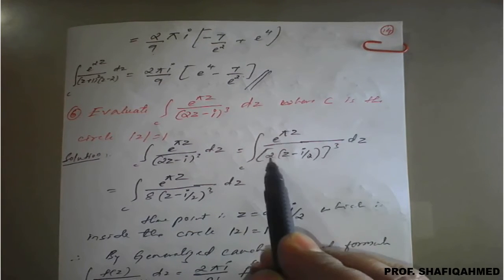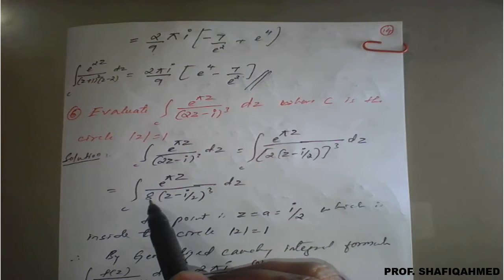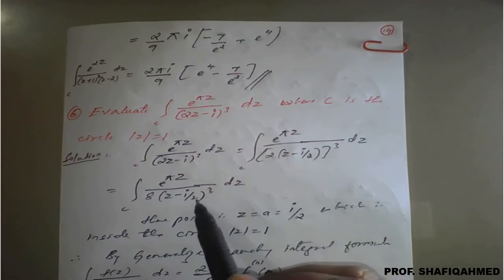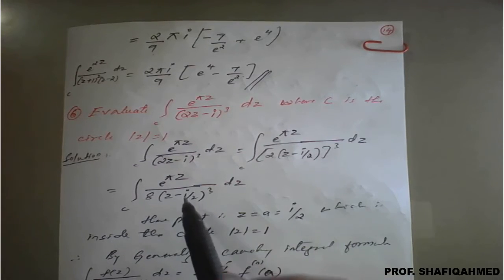You separate it - 2 cube which will be 8 and this bracket cube as it is into dz. Now it is simplified form.